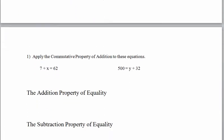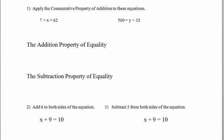Apply the commutative property of addition to these first two equations. Remember, it says you can move around addends — things being added. In the left-hand equation, 62 is not being added so we leave it alone; the addends are 7 and x, so rather than 7 + x we write x + 7. On the other side, 500 is not being added, so rather than y + 32 we write 32 + y.